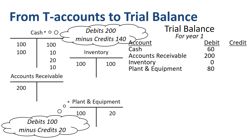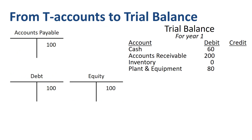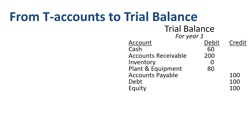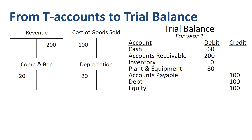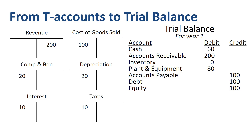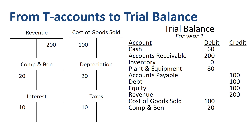Next we do the same for liabilities and equity: 100 credit balance in accounts payable, 100 credit balance in debt, 100 credit balance in equity. Finally, we determine the balances for the income statement or profit and loss accounts. Revenue has a credit balance of 200, compensation and benefits expense has a debit balance of 20, depreciation expense debit 20, interest expense debit balance 10, and tax expense has a debit balance of 10.